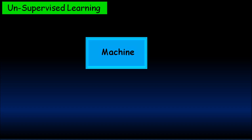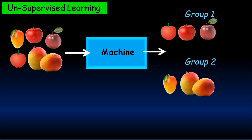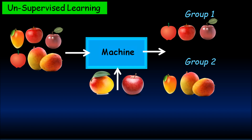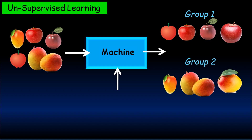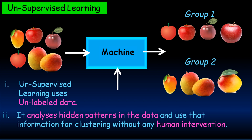Now let us discuss about unsupervised learning. Here the machine is given with unlabeled data as its input — in our case, an image which contains both apples and mangoes. This image doesn't have any labels. The machine analyzes the images for hidden patterns and then groups them according to their features. Next time when you give images of apples and mangoes, the machine places them in their respective group. So, unsupervised learning uses unlabeled data. It analyzes hidden patterns in the data and uses that information for clustering without any human intervention.